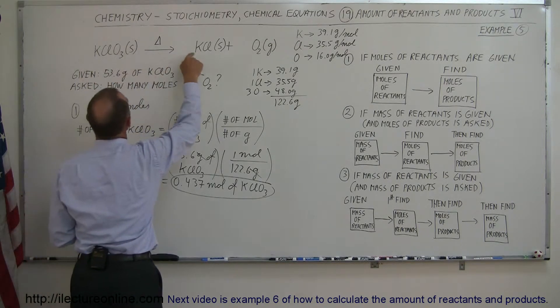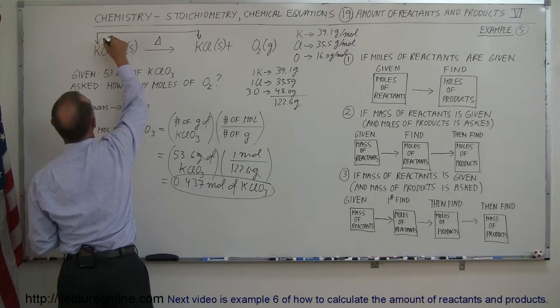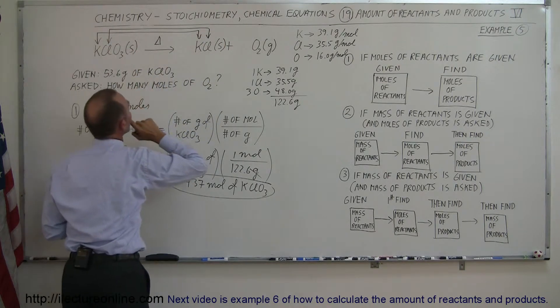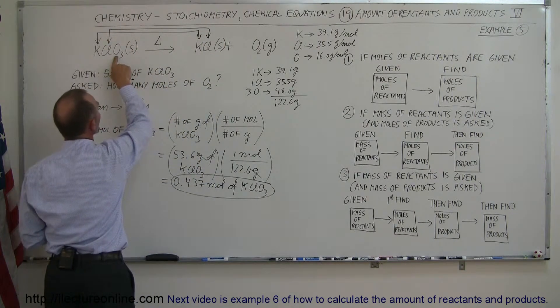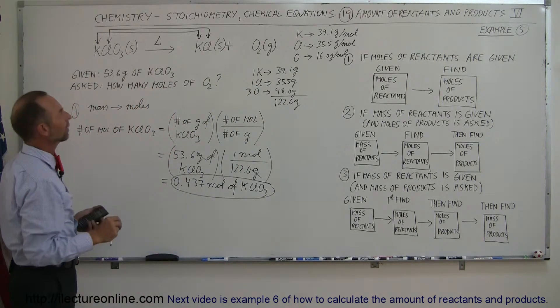So we have one potassium, one potassium. So this here, that looks like it's balanced. We have one chlorine and one chlorine. That makes it balanced. What about the oxygen? We have three oxygens here and two oxygens there. Hmm, that's not balanced.